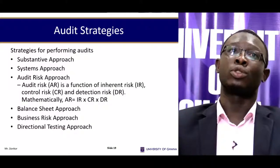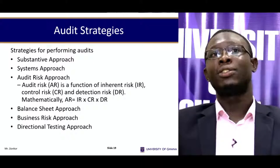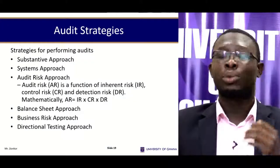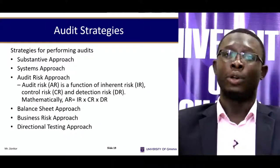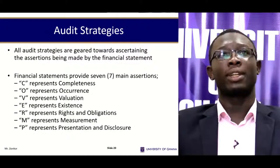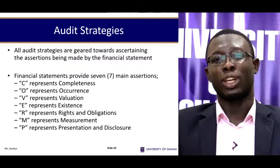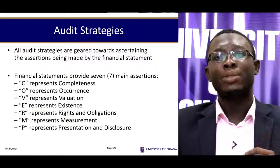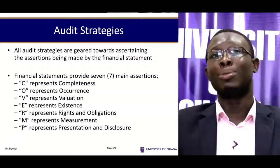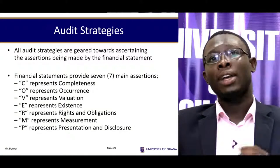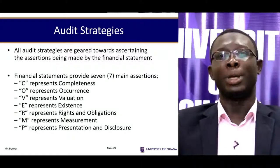Now let's turn attention to audit strategies. Auditors use several strategies in conducting their work: the substantive approach, the systems approach, the audit risk approach, the balance sheet approach, the business risk approach, and the directional approach. Read more about these various approaches. These strategies aim at ascertaining the assertions being made in the financial statement. Management makes certain assertions, and we have seven main assertions remembered by the acronym COVER MP: Completeness, Occurrence, Valuation, Existence, Rights and obligations, Measurement, and Presentation and disclosure.